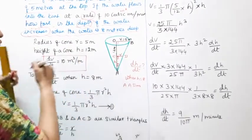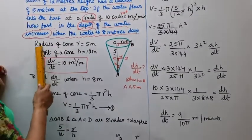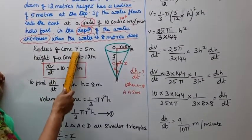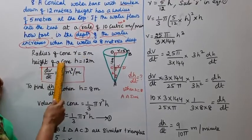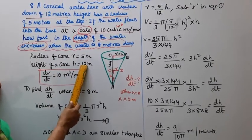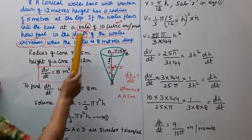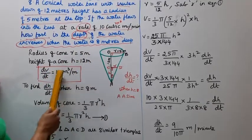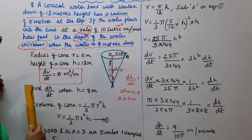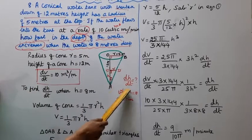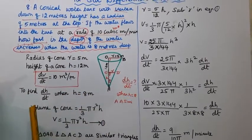We note that the radius of the cone is 5 meters and the height of the cone is 12 meters. So dv/dt equals 10 cubic meters per minute. We need to find dh/dt when h is equal to 8 meters.